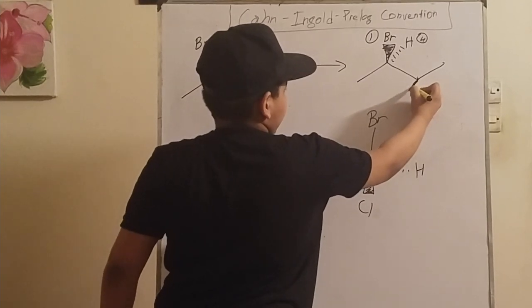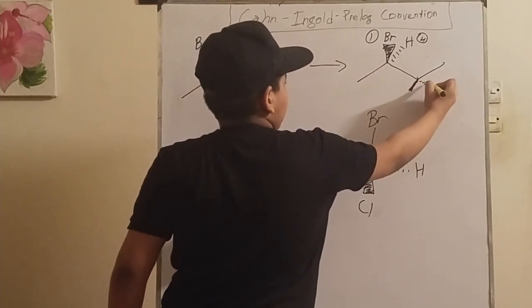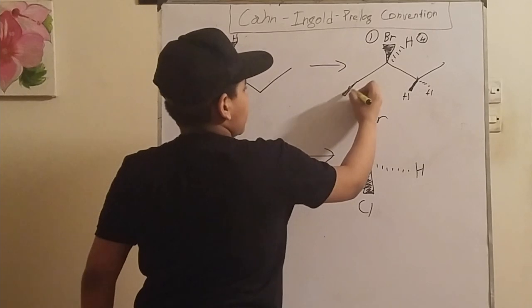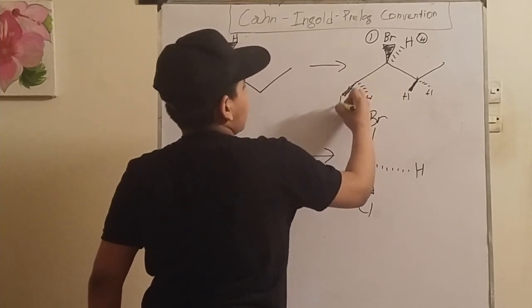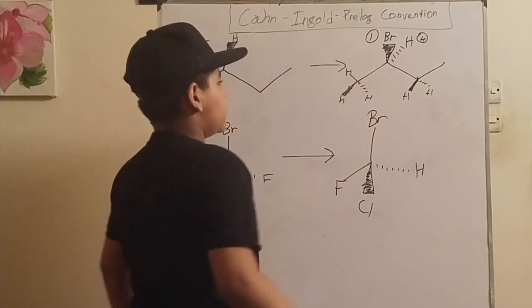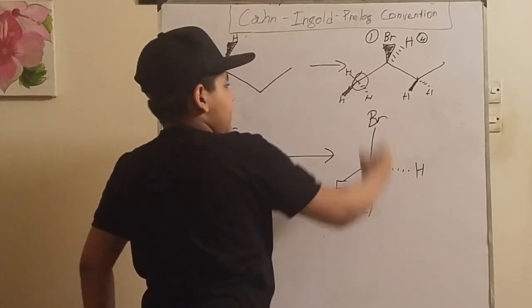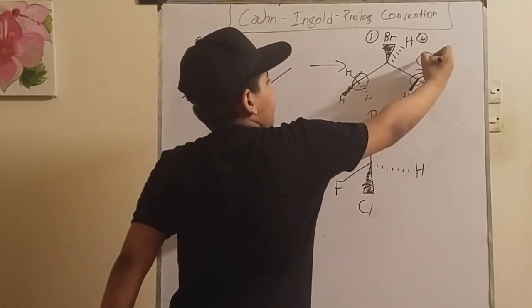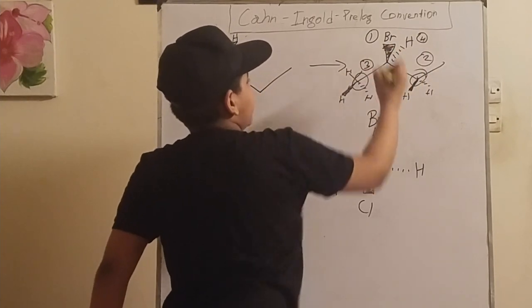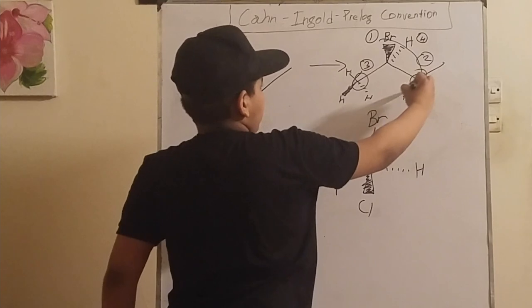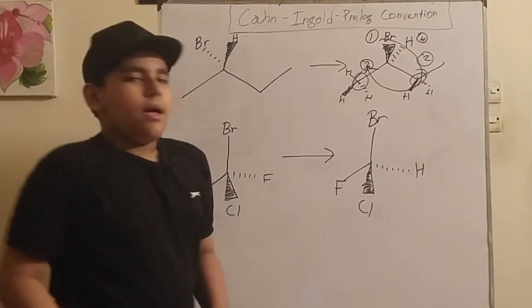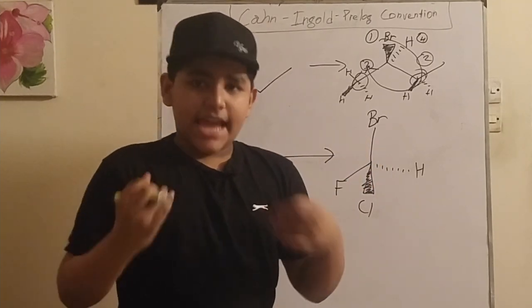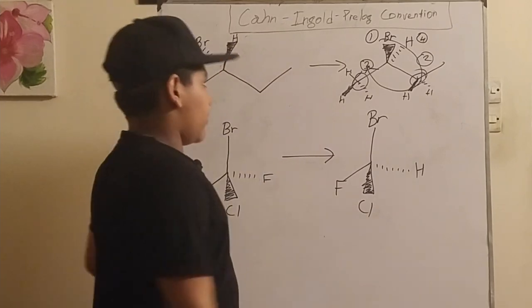We know that this will be priority one, this will be priority four. These are the implied hydrogens. So we know that this carbon is lighter than this carbon, so this will be priority two and this will be priority three. So when we make the circle it looks like an R. But since we inverted the molecule, we have to invert the answer to make it a correct answer. So this molecule would actually be S.